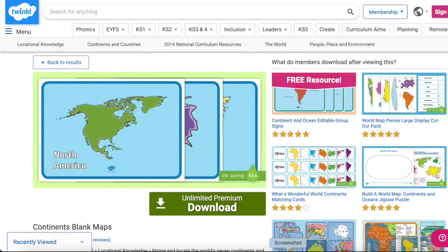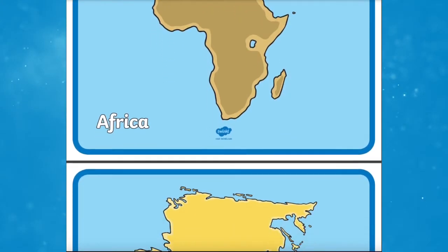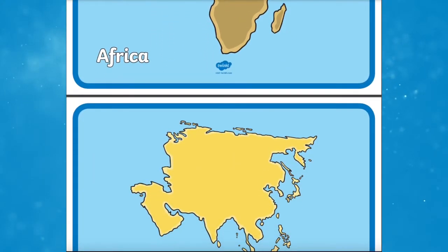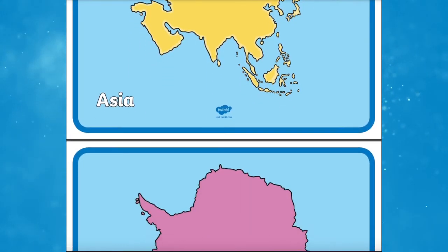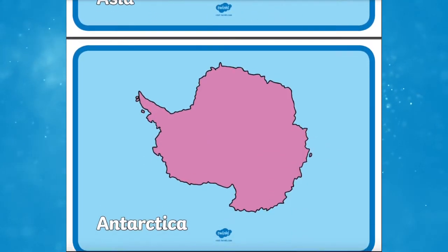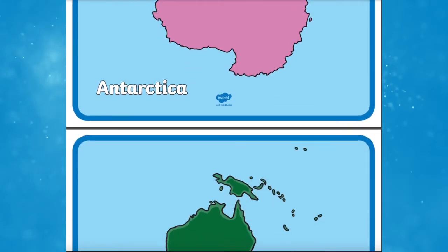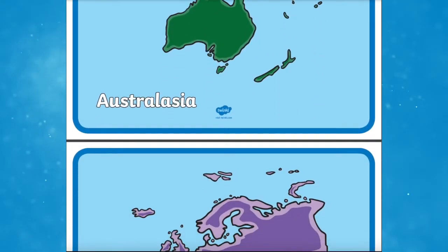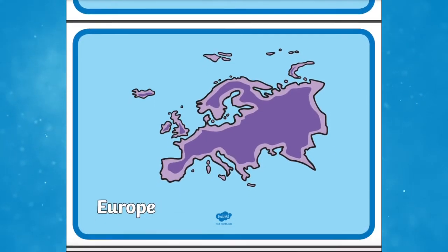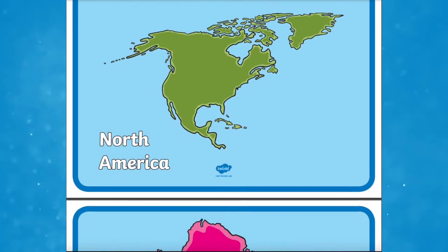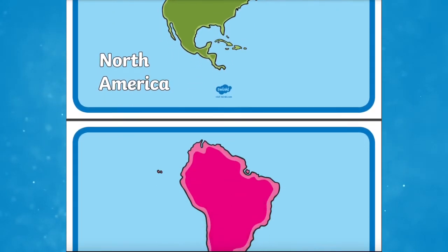Wanting to help your children understand the continents better? The continents blank maps are great to display for your children to understand all seven of the world's continents. Why not use them to show where countries are located in each continent? You could even turn it into a game — name a country and your children have to guess which continent that country belongs to.